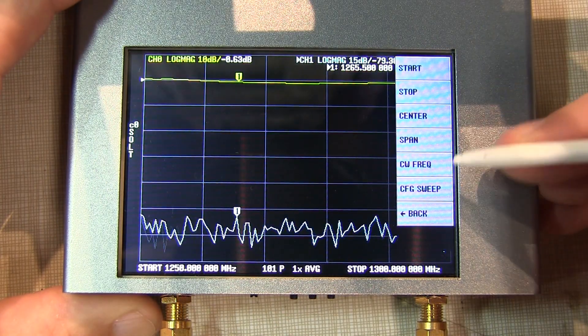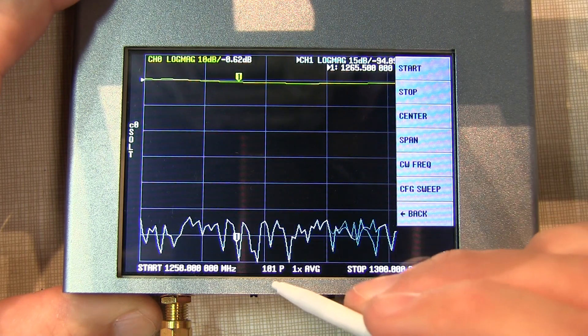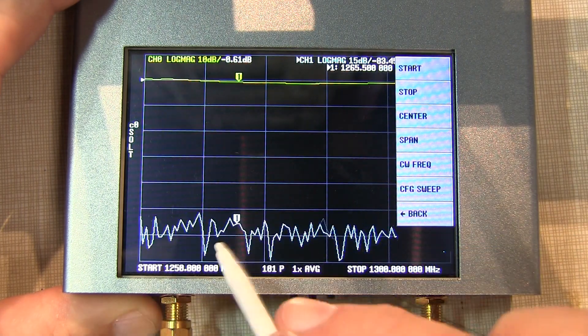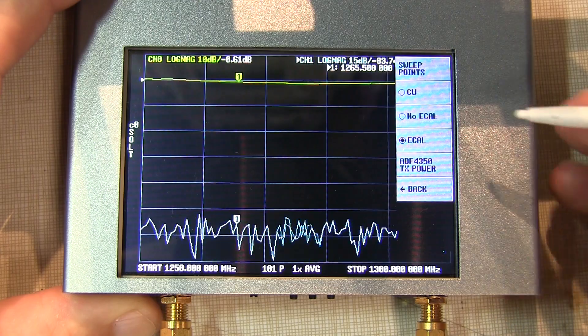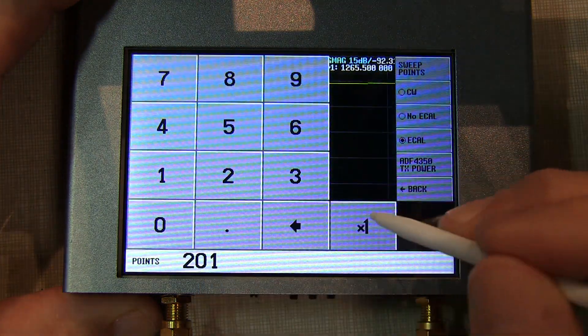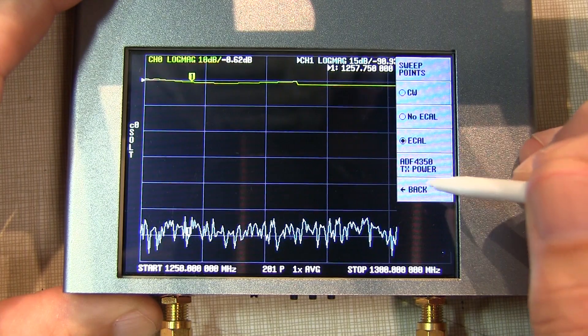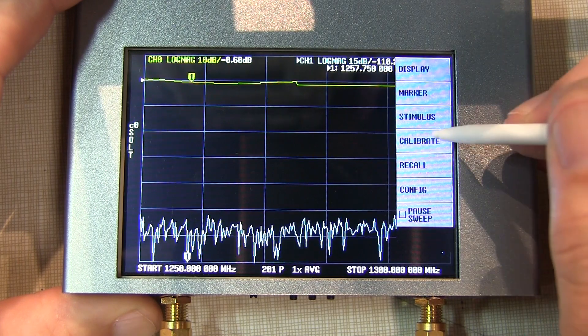I want to configure the sweep. Instead of 101 points, I want 201 points to get a little finer resolution on the display. This firmware allows me to go up to 201 points. Now all we need to do is run a calibration.